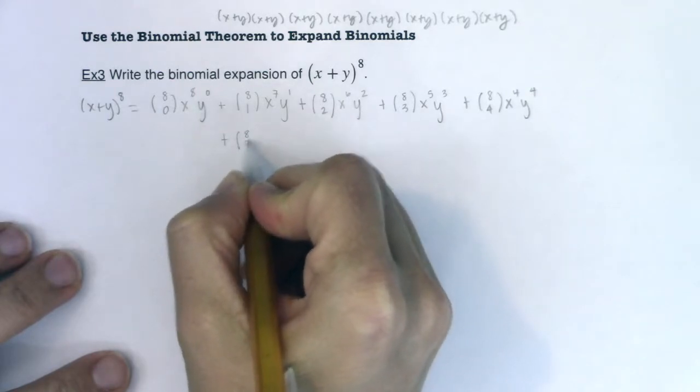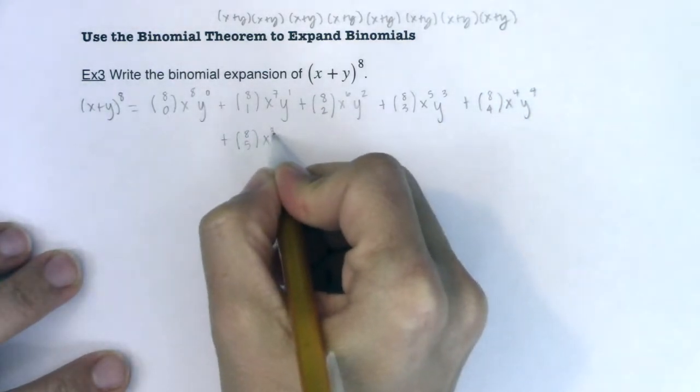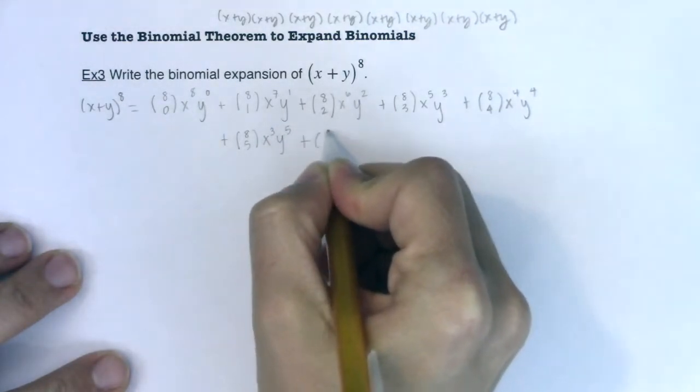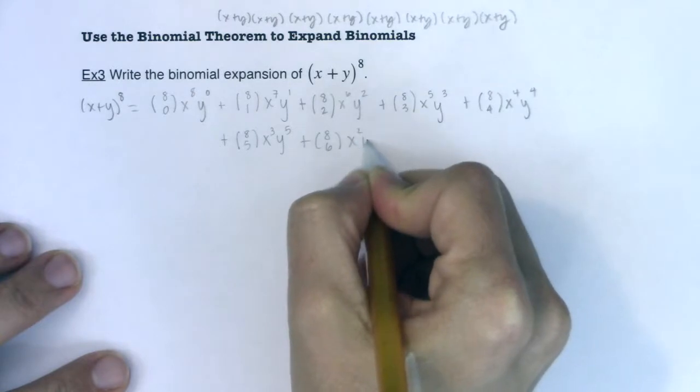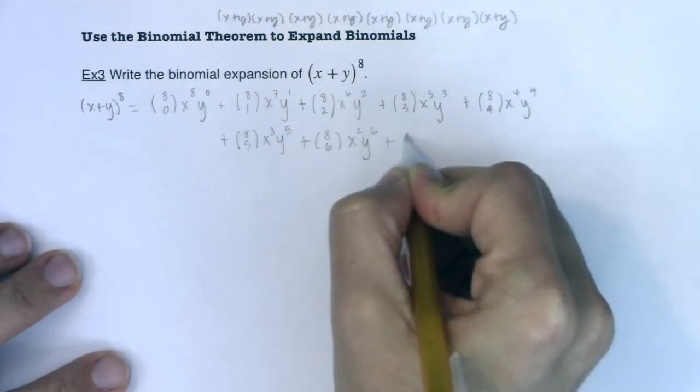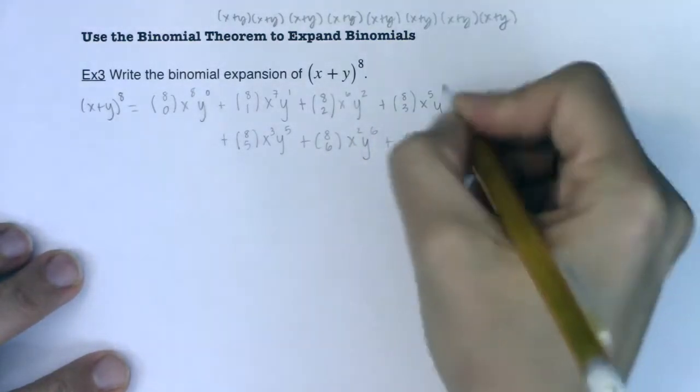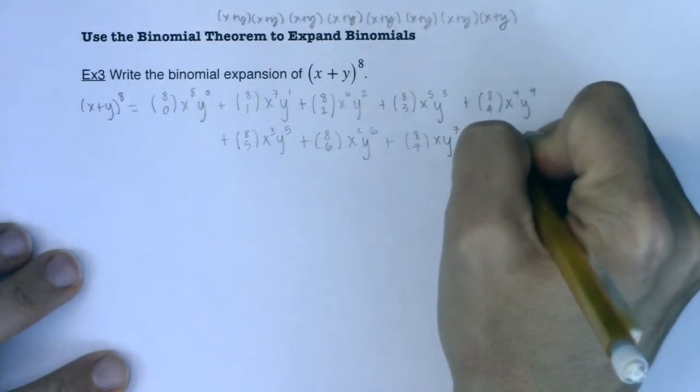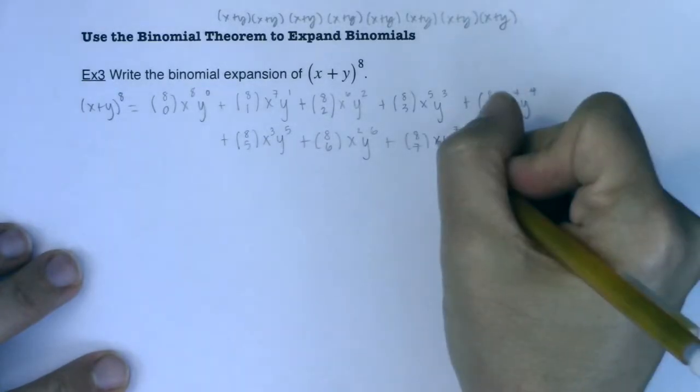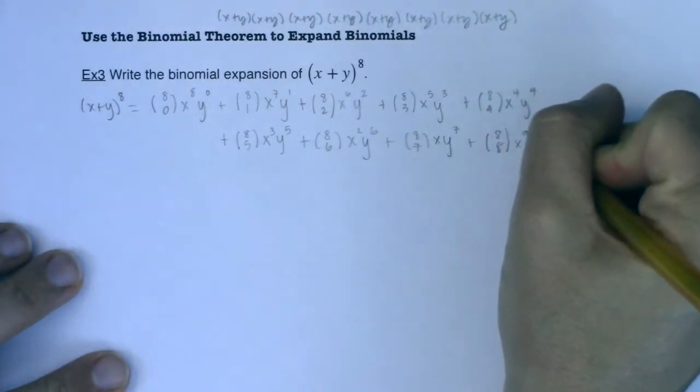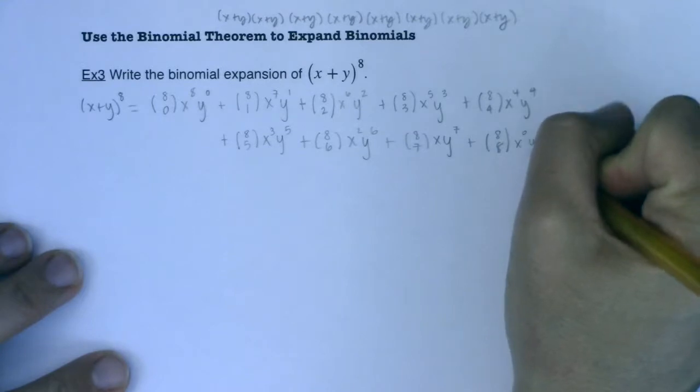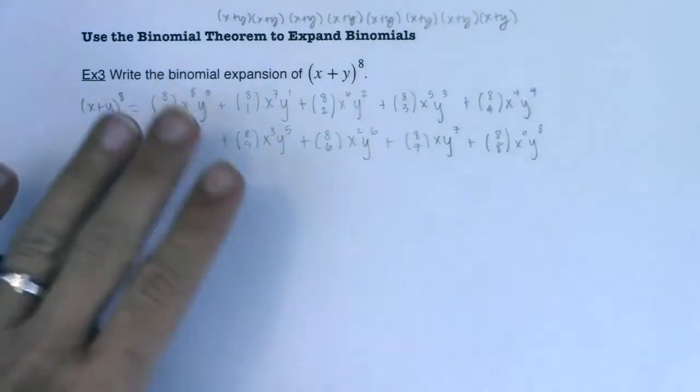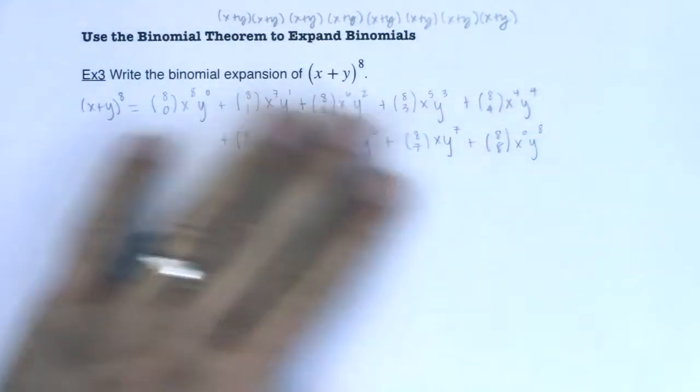We've got eight choose five. Descend the power on x, so that's going to cubed. Y is going to go to the fifth. We've got eight choose six. This will be x squared, y to the sixth. I've got eight choose seven. This will be x, y to the seventh. And then last but not least, we'll have eight choose eight. The x's actually go away. It will technically be x to the zero, but that's just going to be the number one, and then y to the eighth power. And that, I'm still not done, but that's the binomial theorem being played out.